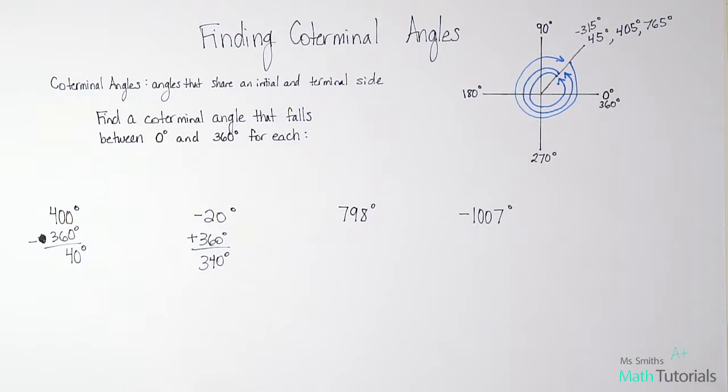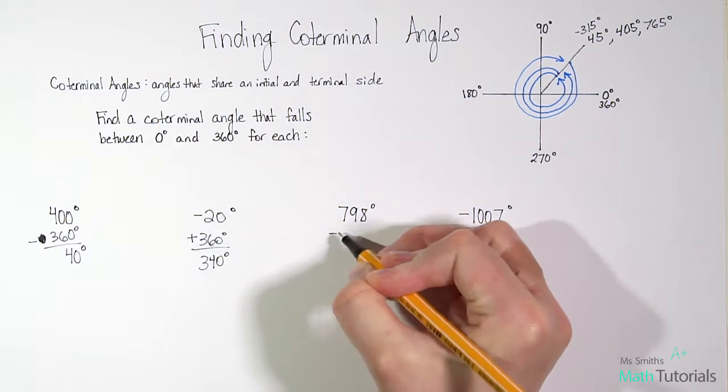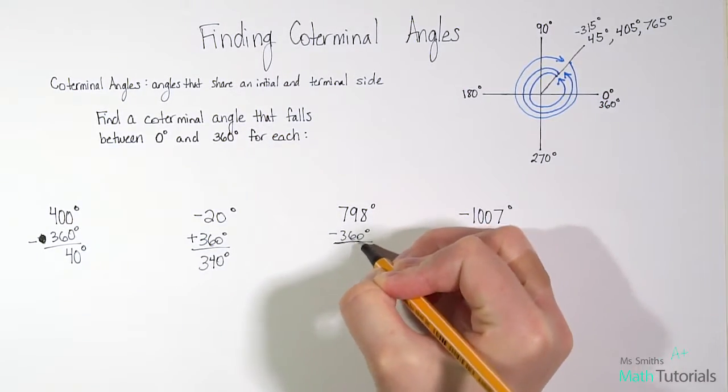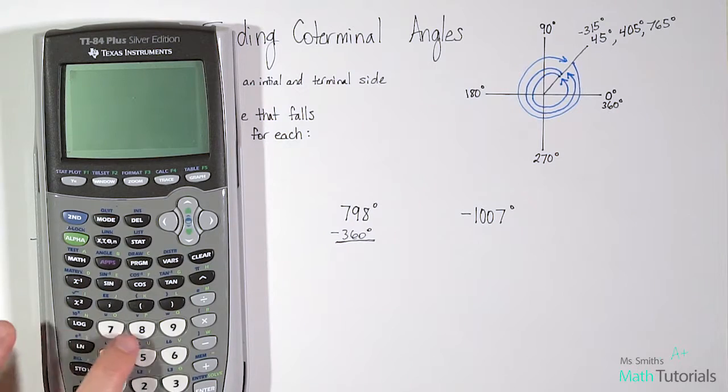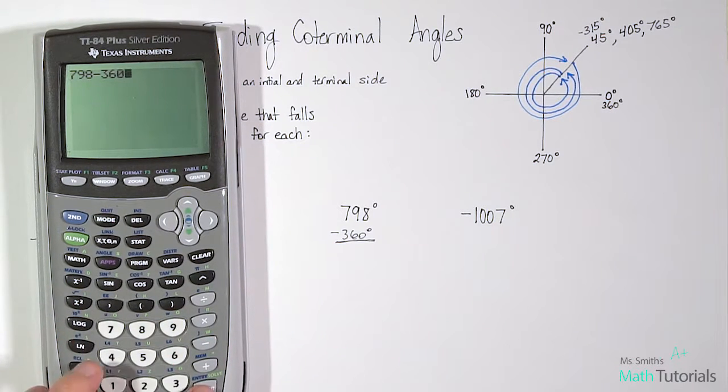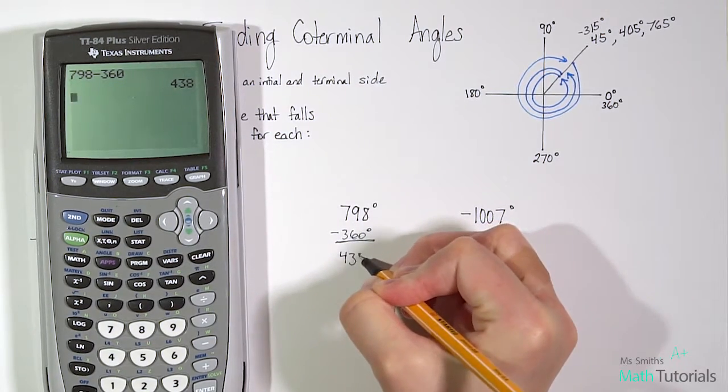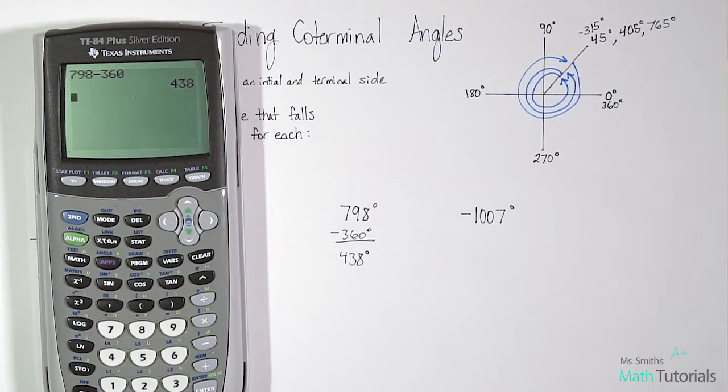798 degrees. Well, obviously that's way more than 360, right? So this time, are we going to add 360 or are we going to subtract? Well, definitely we're going to subtract 360. So let's see what we get when we subtract 360. So we're starting at 798, subtracting 360, and we're getting 438 degrees. Is that where I need to be though? Does that fall between zero degrees and 360 degrees like they requested? It does not.